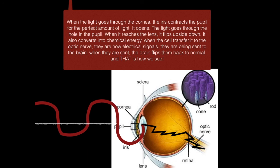It also converts into chemical energy. When the cells transfer it to the optic nerve, they are now electrical signals being sent to the brain. When they are sent, the brain flips them back to normal. And that is how we see.